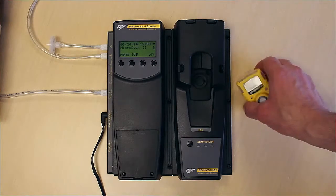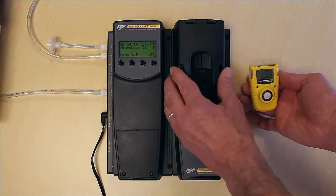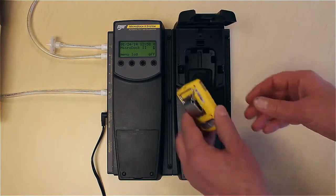First, ensure the detector is on and in normal operation mode. Next, squeeze the two release tabs on the MicroDock docking module and raise the lid.